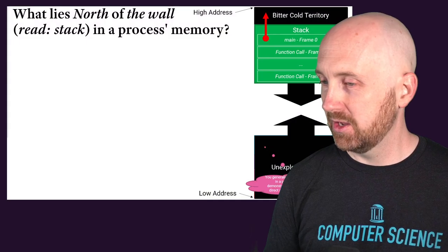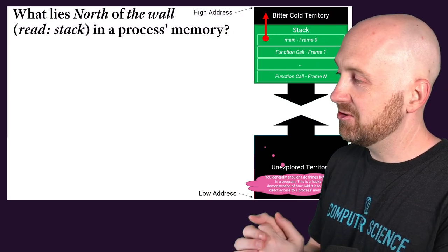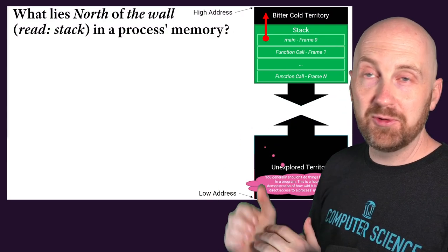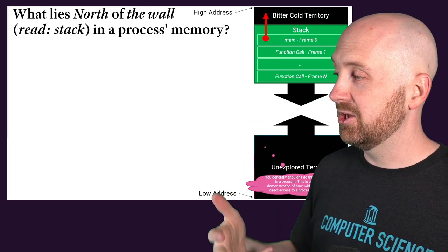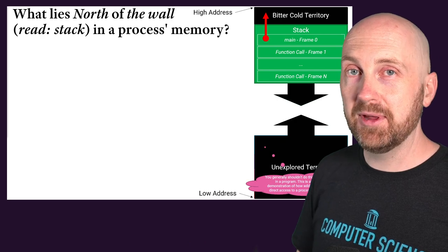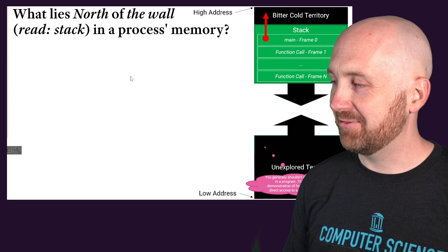A process in memory has a segment allocated for the call stack where your function's local variables will be allocated. What lies above the call stack in a process? Let's write a C program to go on a little adventure to explore this space above our quote-unquote stack frame wall.